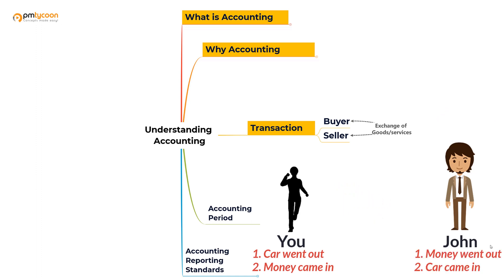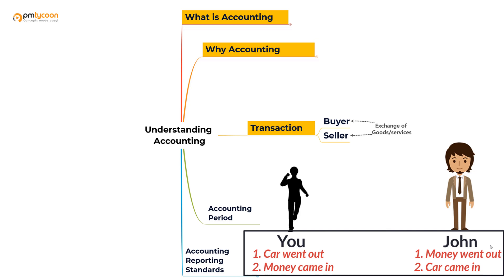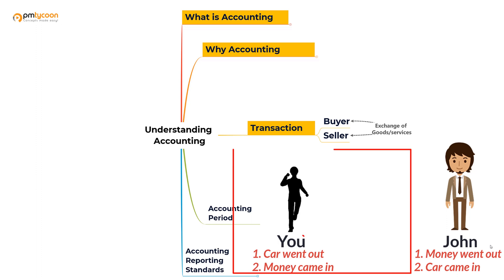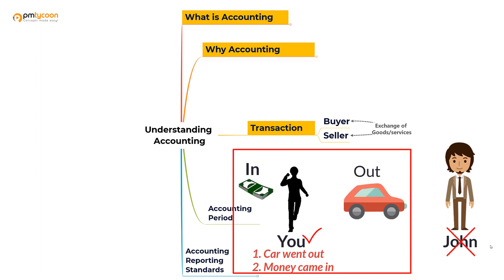A transaction would have four events if you consider both perspectives, but in business we always look at things from our own perspective. This matters because sometimes it can be unclear whether something is a credit or a debit. When you look from your perspective, if something is credited or debited, the opposite would have happened from the other person's perspective.